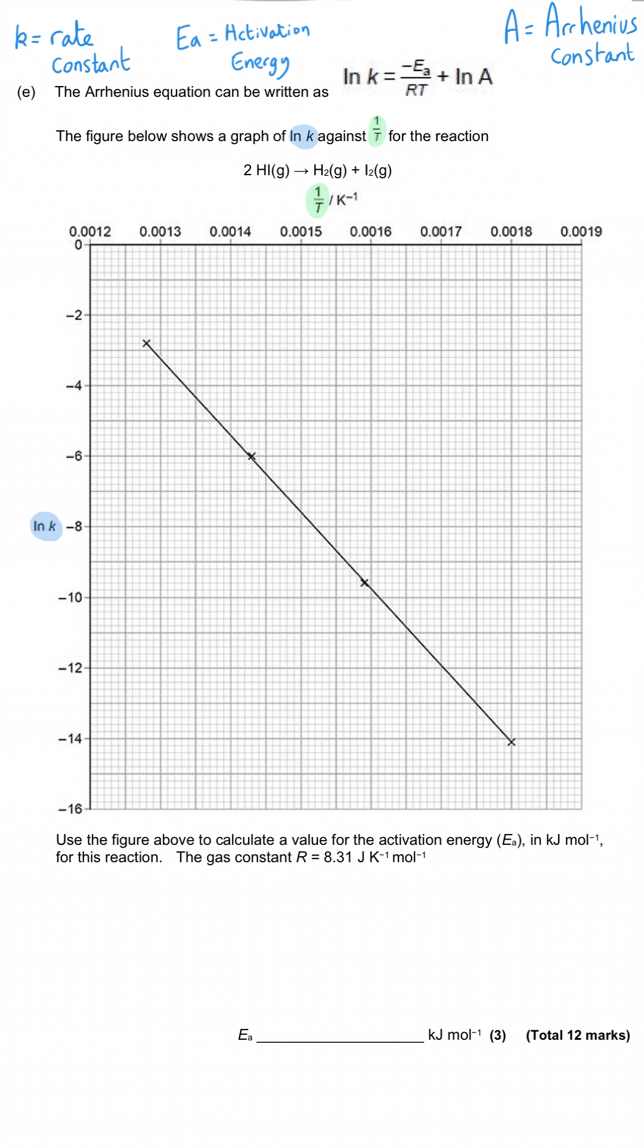We've got natural log of K on the y-axis, which doesn't have units because you can't take logs of values with units. This is a straight line graph with the form y = mx + C, where y is ln K, C which is the y-intercept is ln A, and mx is this term here. Because 1/T is on the x-axis, that means the gradient is the negative of the activation energy divided by R.